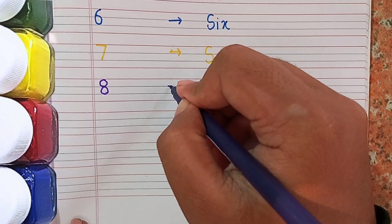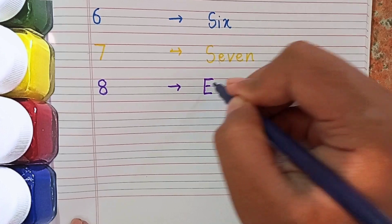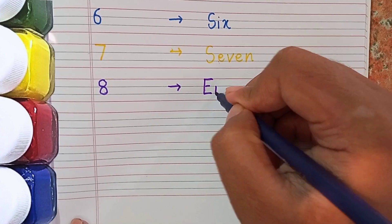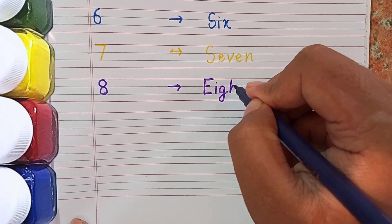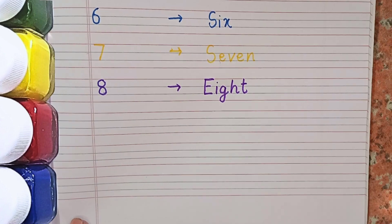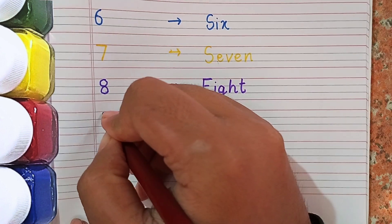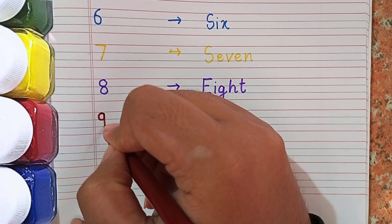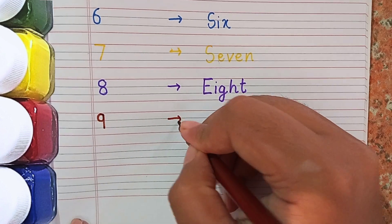After 7 the next number is 8. This is 8 and the spelling of 8 is E-I-G-H-T. Remember the spelling: E-I-G-H-T. Now the next number will be 9.